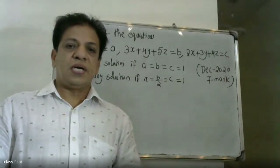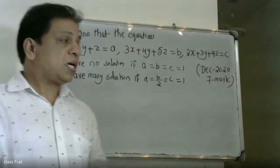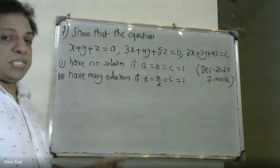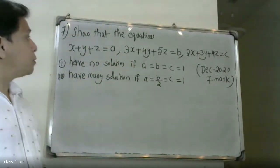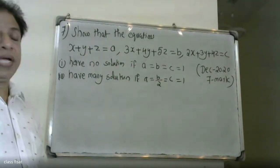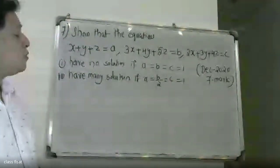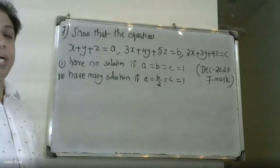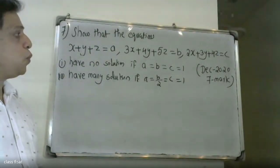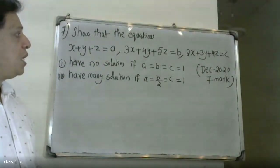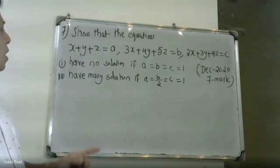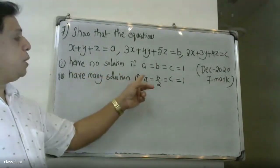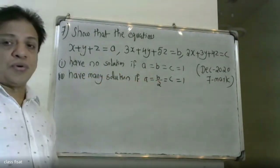Good morning, students. At the university, the question is: show that the system x plus y plus z equals a, 3x plus 4y plus 5z equals b, 2x plus 3y plus 4z equals c. One question: show it has no solution if a equals b equals c equals 1.